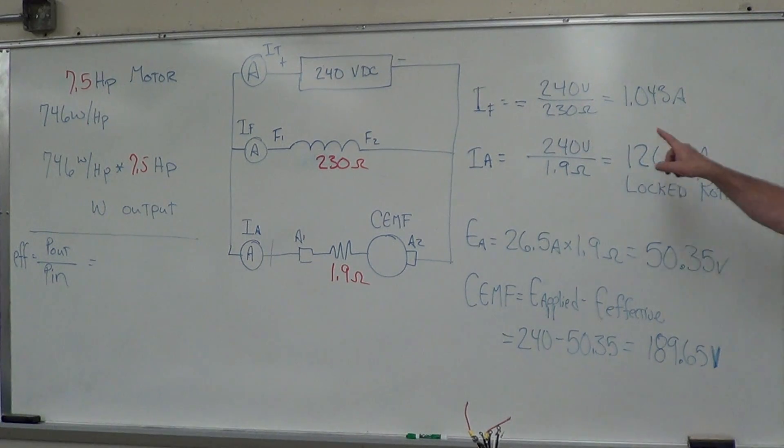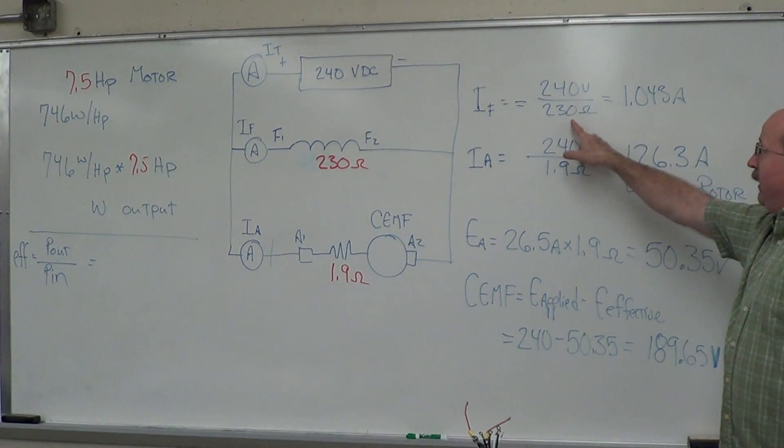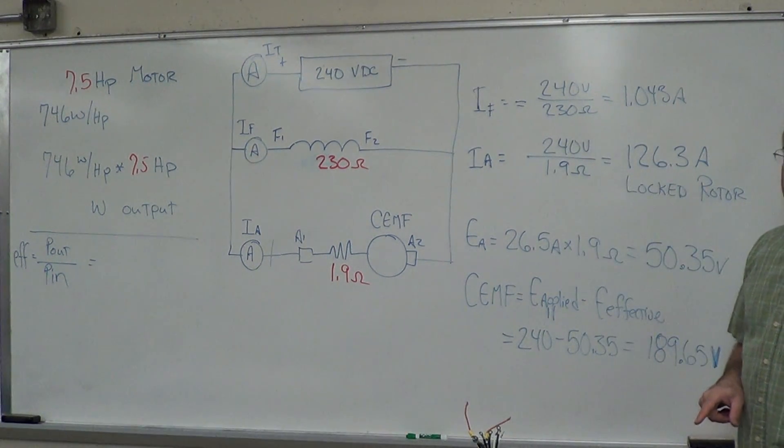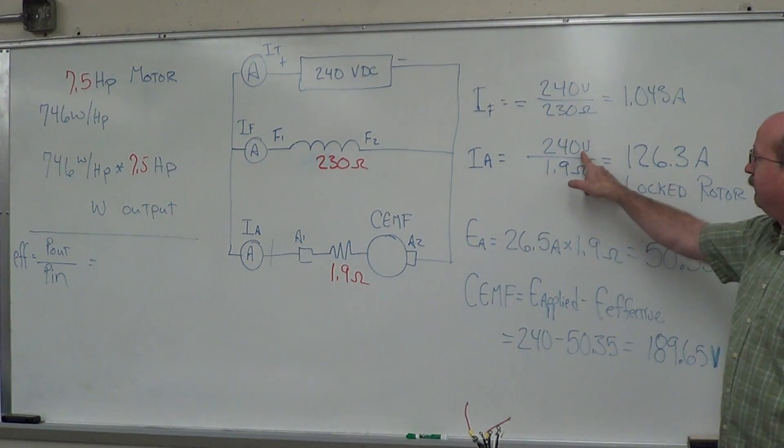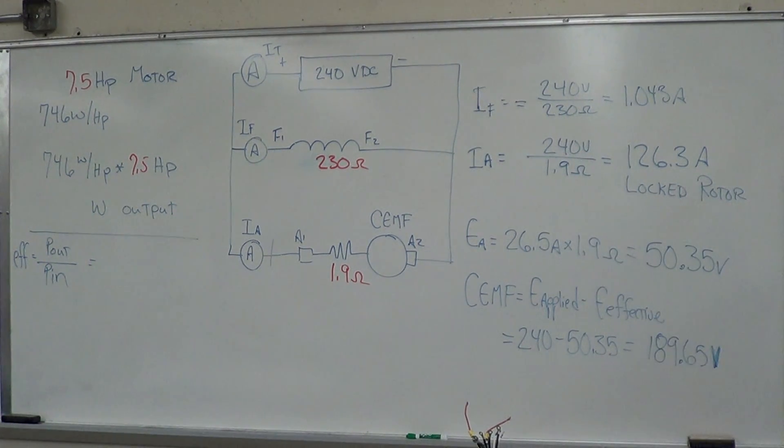We've got 240 volts divided by 230 ohms for the shunt field, 240 volts divided by 1.9 ohms. And we're looking at about 127 amps locked rotor current. 1.043 plus 1.263.